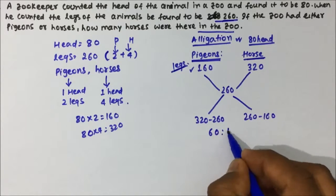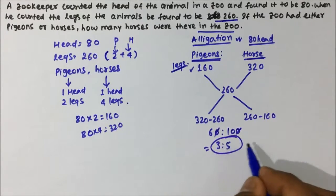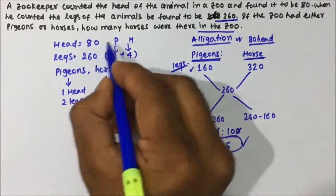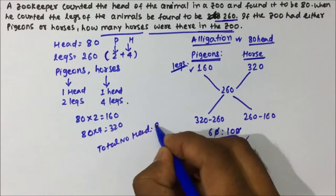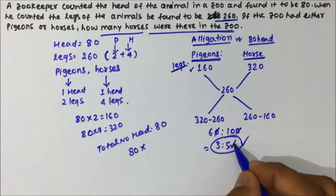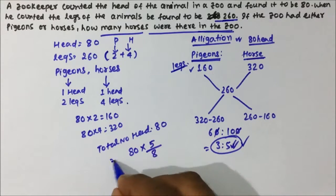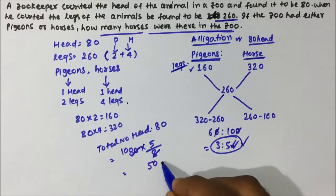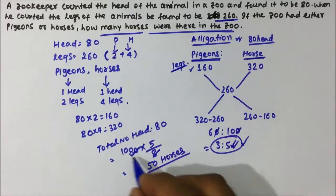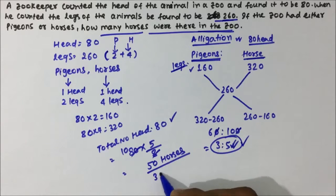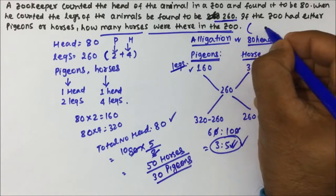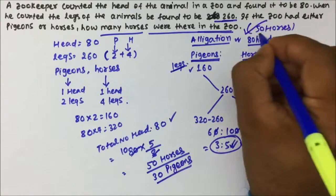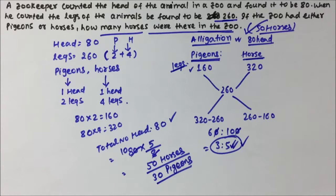The ratio 3:5 represents pigeons to horses. Total parts = 3 + 5 = 8, and total heads = 80, so each part = 10. Horses = 5 × 10 = 50, and pigeons = 3 × 10 = 30. The answer is 50 horses. I hope you understood the application of Allegation in Time and Distance as well as simplification. Thanks a lot for watching the video.